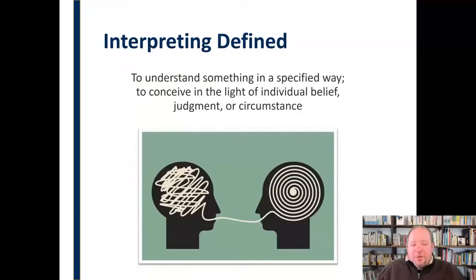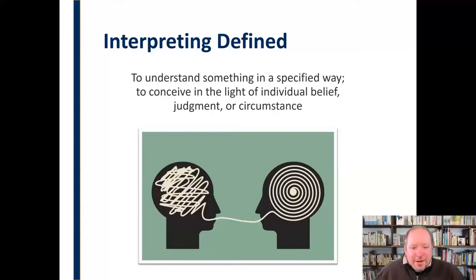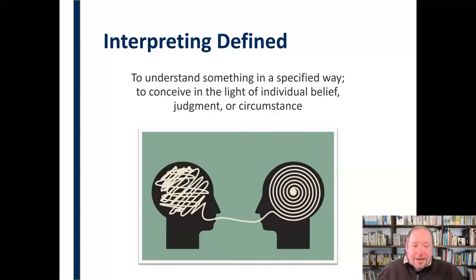In order to define interpreting and make sure we're all on the same page: interpreting is to understand something in a specified way, or to conceive in the light of individual belief, judgment, or circumstance. So interpreting has a lot to do with the way we see something and understanding something in a way that is individual and specific to us.